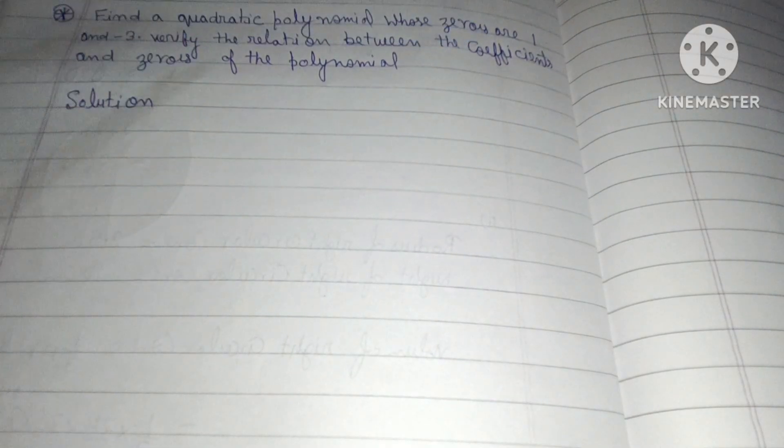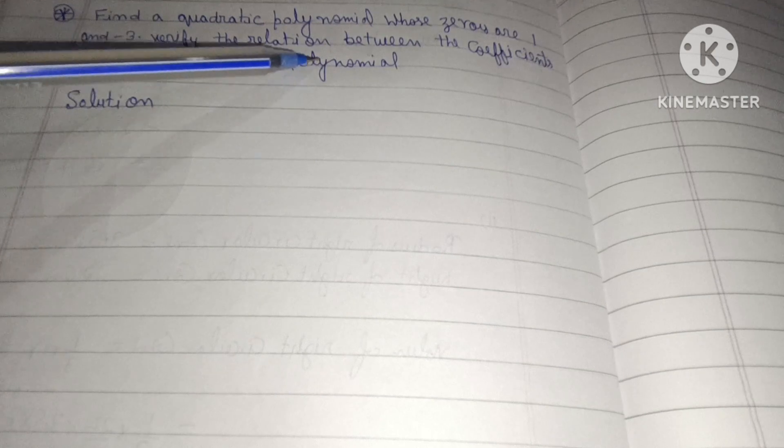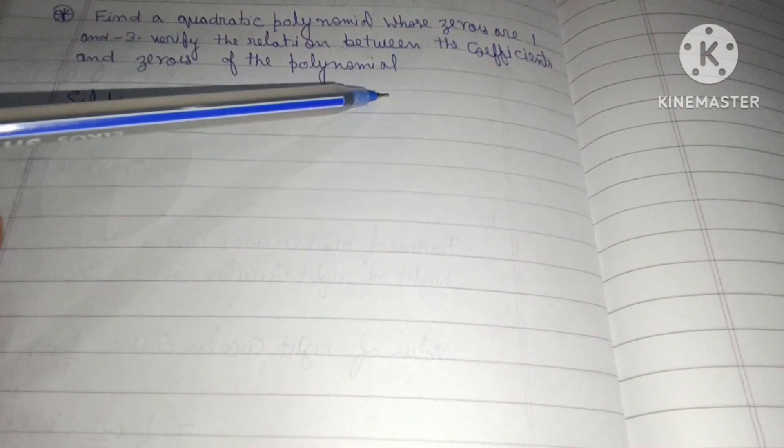Find a quadratic polynomial whose zeros are 1 and minus 3. Verify the relation between coefficients and zeros of the polynomial.